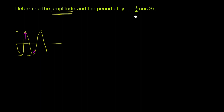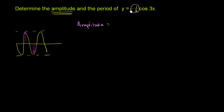Right over here we have y equals negative 1 half cosine of 3x. So what is going to be the amplitude of this? Well, the easy way to think about it is just what is multiplying the cosine function — and you could do the same thing if it was a sine function. We have negative 1 half multiplying it, so the amplitude is the absolute value of negative 1 half, which is equal to 1 half.